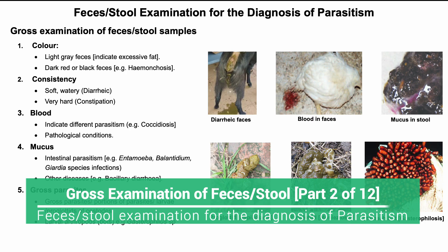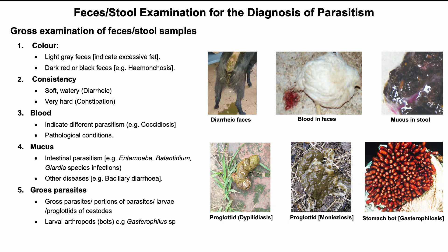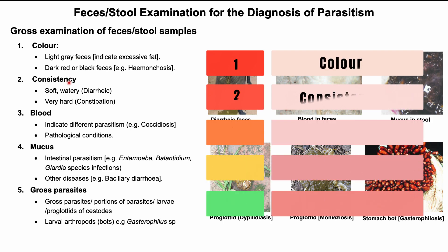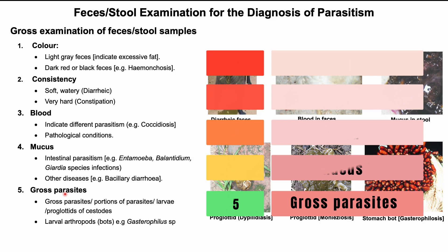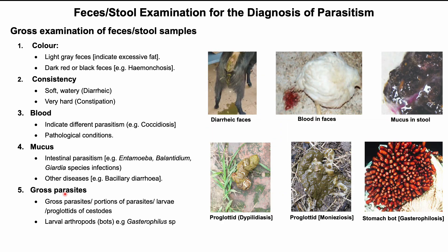When feces or stool samples are sent to a lab, they are checked for different characteristic features such as color, consistency, presence of blood, mucus, and gross parasites. These features are very important and will give diagnostic clues for assumption or prediction of parasitism. The results of this gross examination of feces can be matched with different clinical tests, which will help in final or confirmatory diagnosis.